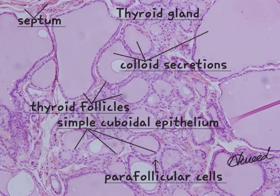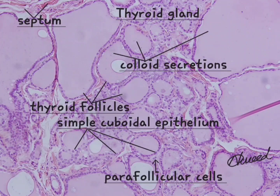In between the septa lies fine reticular connective tissue, which is highly vascular. The follicle epithelium contains two types of cells: follicular cells and parafollicular cells.